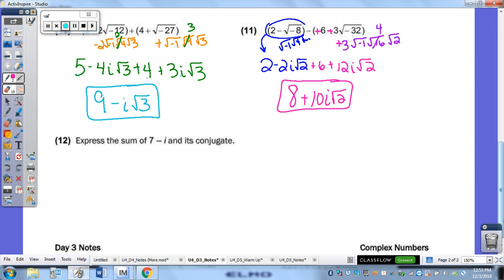And then our last one here. 7 minus I and its conjugate. We're adding them. Some needs to add. So, there's your 7 minus I plus its conjugate. Remember, you just simply change those signs in the middle. So, its conjugate is 7 plus I. So, then 7 plus 7 is 14. Negative I plus I cancels each other out. So, we're left simply with 14.